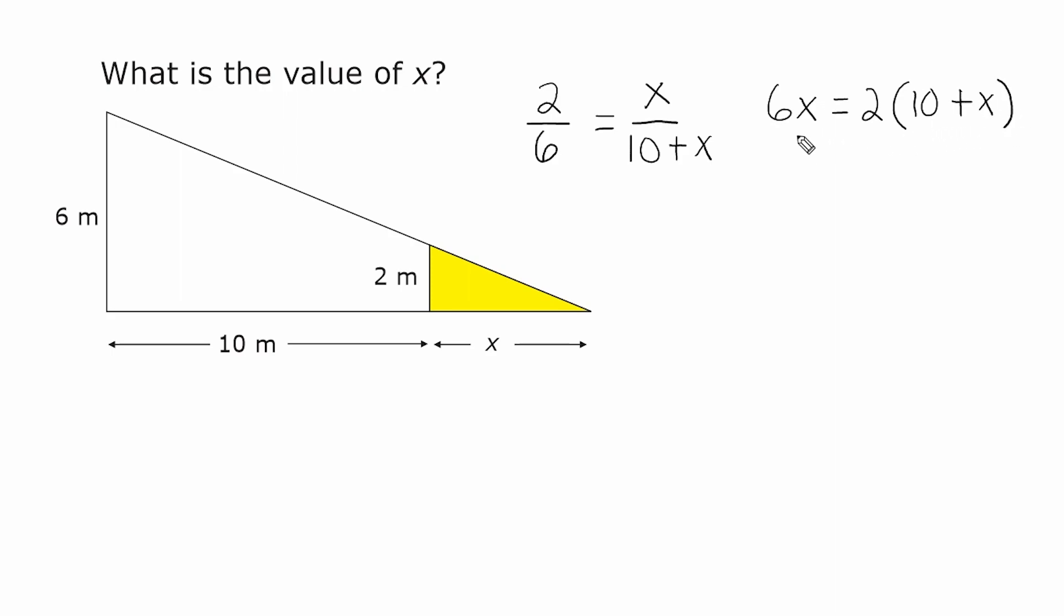And now what we do is we take this equation and solve for x and that is going to tell us the value of x. So let's bring down this 6x to start with and then we're going to distribute this 2 using the distributive property. So we have 2 times 10 which is 20 and 2 times x which is 2x.